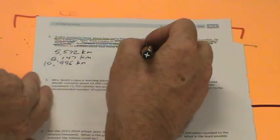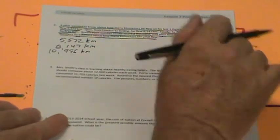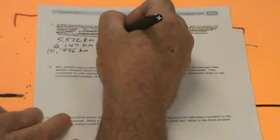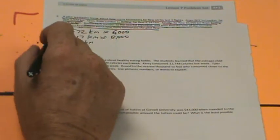Round each number to the nearest thousand and then find the sum of the rounded numbers to estimate about how many kilometers the pilot flew. 5,572: the midway point is 5,500. Is this greater than 5,500? It is, so we round up to 6,000. 8,147: the midway point is 8,500. Is this less than 8,500? Yes, so we round to 8,000. 10,996 is only 4 away from 11,000, so it's very close. We're going to put 11,000.